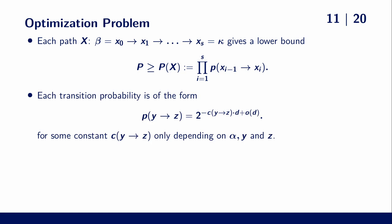Asymptotically, these transition probabilities from norm y to z are just single exponentially small in the dimension. An important fact is that this constant in the exponent only depends on the list size parameter alpha and the norms of y and z.